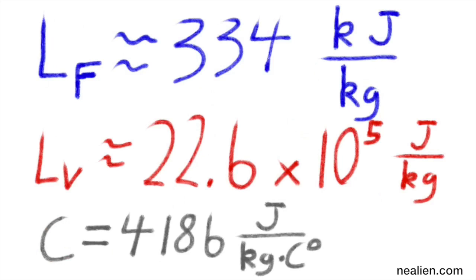These numbers of energy per unit mass are the amount of energy that it takes to go from one state to the other. You could go, for example, from ice to liquid or from liquid to ice and you'd use the same number. The transition would either take the energy or release the energy.